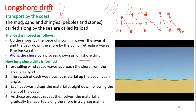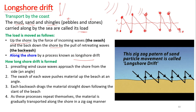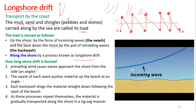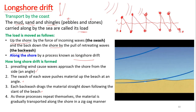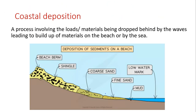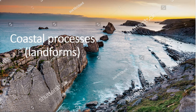As you can see in the animation, the material moves from point A to point B. The prevailing wind causes waves to approach the shore from the side at an angle. The swash pushes material up the beach at an angle, then each backwash drags the material straight down the slope of the beach. As this process repeats, material is gradually transported along the shore in a zigzag manner — that is known as longshore drift. Coastal deposition involves materials carried by the sea being dropped by waves, building up to form landforms such as coastal dunes and beaches. In the next lesson, lesson two, we'll be looking at coastal landforms.